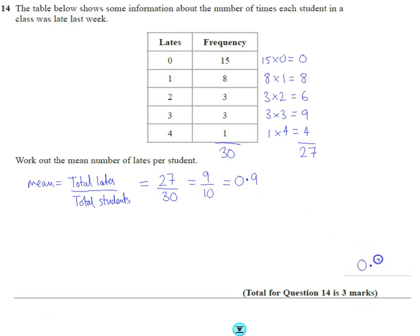So there were 0.9 lates per student. Obviously you can't have 0.9 lates, but that's how you calculate the mean.